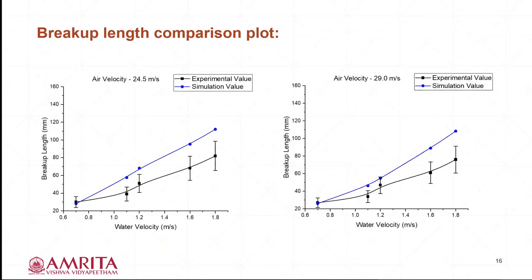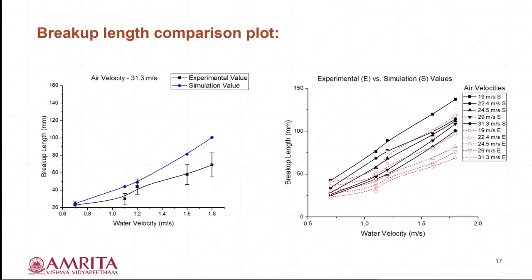For the left plot, where air velocity is 24.5 m/s, the minimum, maximum and average uncertainty for the simulation values is 6.3%, 32.2%, 23.8% respectively. For the right plot, where air velocity is 29 m/s, the minimum uncertainty is 3.4%, maximum is 31.4% and average is 21.1%. On the left plot, where air velocity is 31.3 m/s, the minimum, maximum and average uncertainty for the simulation values is 6.5%, 31.9% and 21.7% respectively.